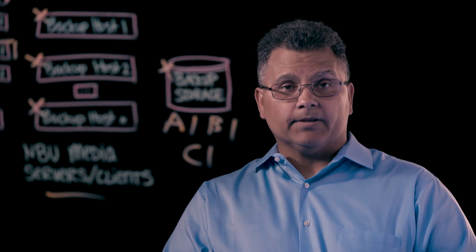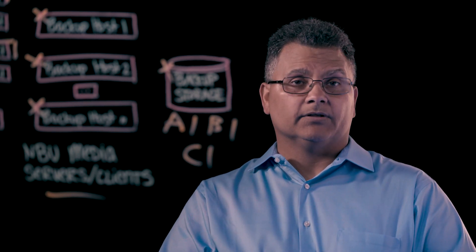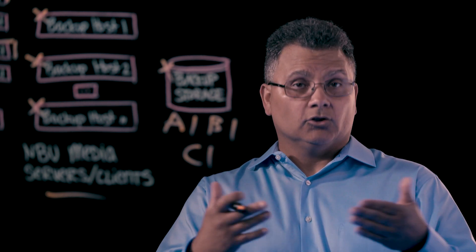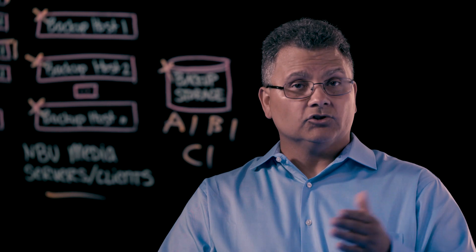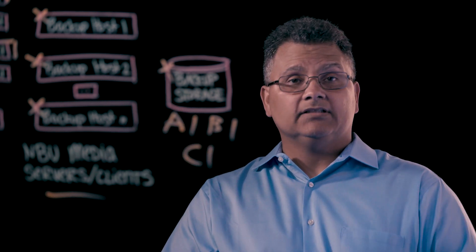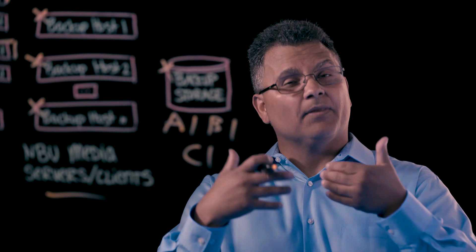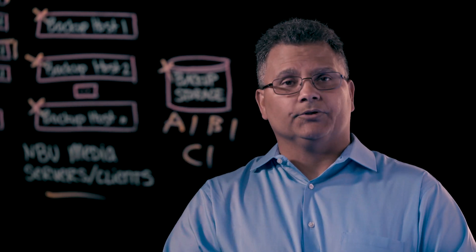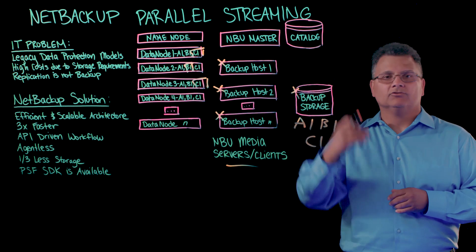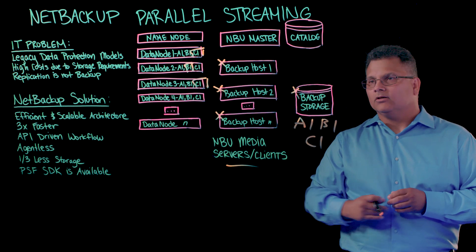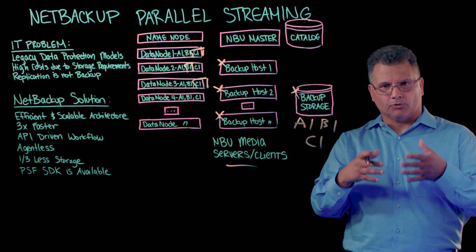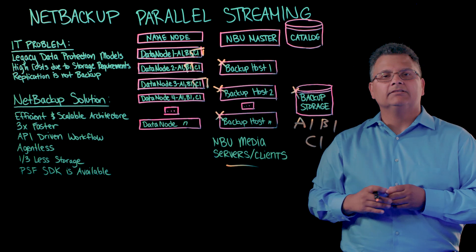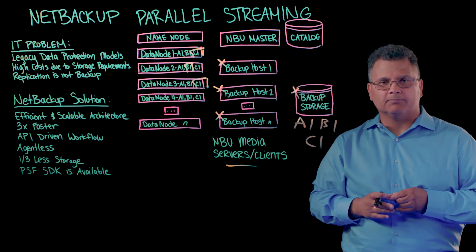Once we have the NetBackup image, we can copy it throughout the NetBackup environment — out to an access appliance for long-term retention for on-prem storage, to the cloud, or out to tape. These options are available because the power of NetBackup can distribute that data wherever we want. When it's time to do a restore, the NetBackup master will kick off the restore process, identify a backup host to process the data, identify the blocks we need to recover, and those blocks will be sent directly to the data node. Recovery is simple and straightforward.